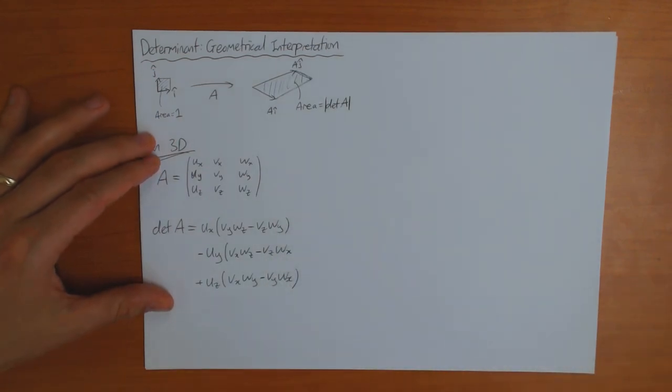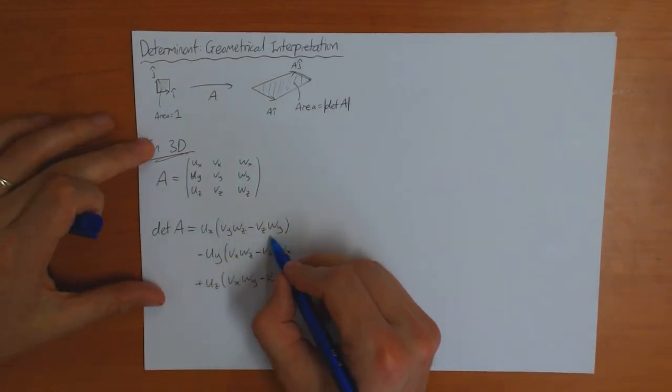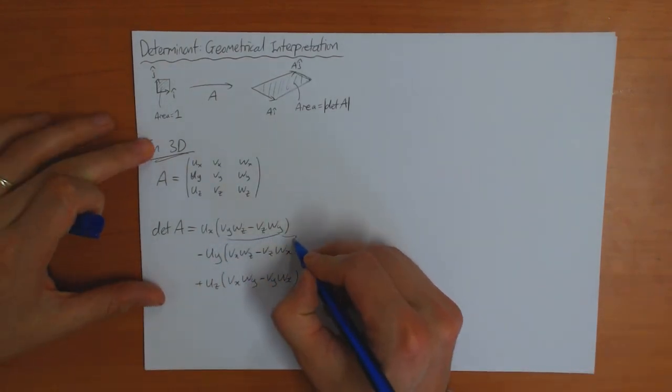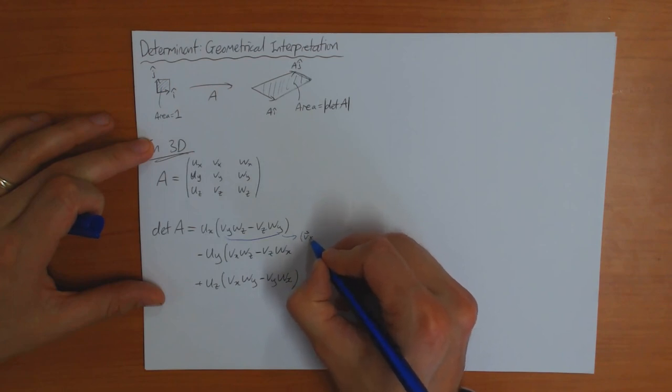But you notice something, hopefully, these formulas look familiar. This here is the X component of the vector product V cross W.